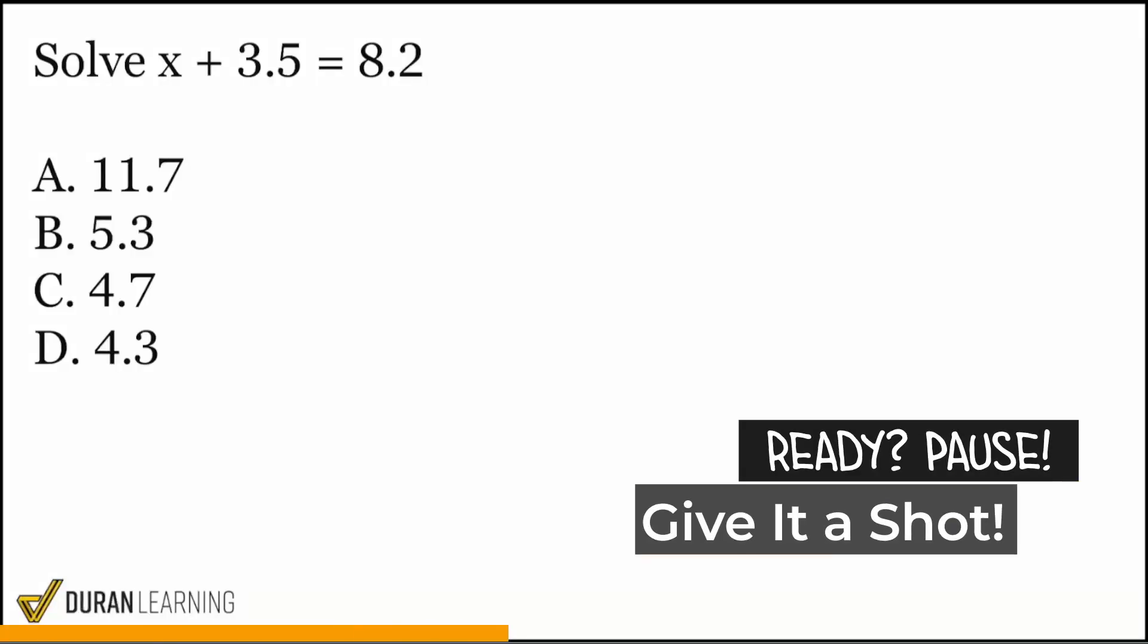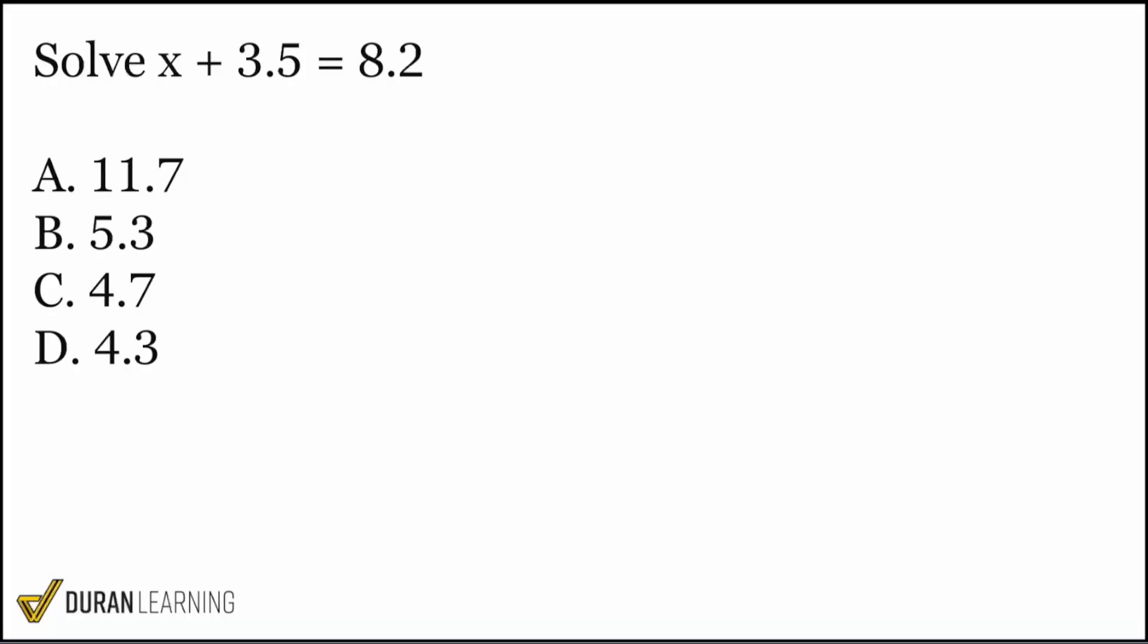All right. So let's take care of this question. It says X plus 3.5 equals 8.2. So whenever we want to solve equations, remember that all we're doing here is working backwards from the order of operations. That's it, everybody. We're just working backwards from the order of operations. So when I see that we have X plus 3.5 equals 8.2, sure, you might get distracted by the decimals, but all in all, what we have to do is do the opposite of adding 3.5.